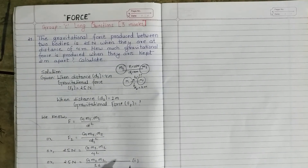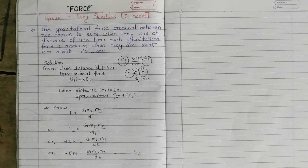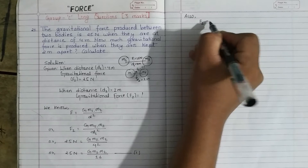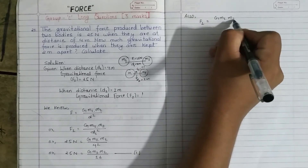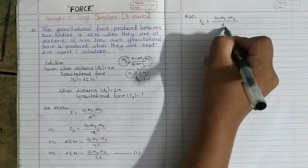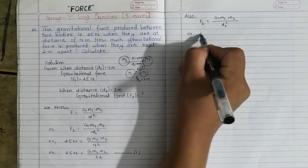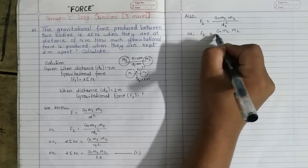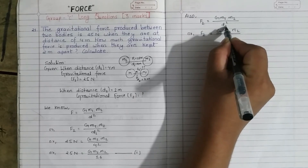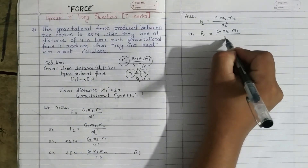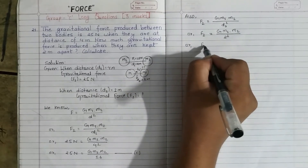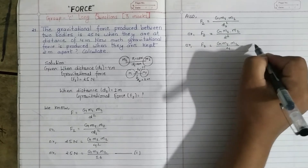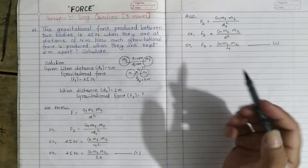Also, we can write F2 equals G·M1·M2 divided by d2 squared. Since d2 is 2 meters, d2 squared is 4. So F2 equals G·M1·M2 divided by 4. Let this be equation 2.